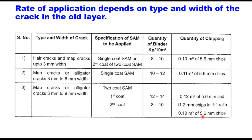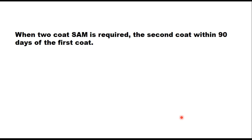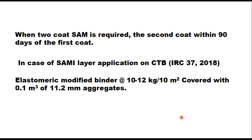For cracks above 9 mm width and when the cracked area is more than 50%, two coats of SAM are used with quantities as per the specification table. When using SAMI (stress absorbing membrane interlayer), it is laid in a single coat only. For cracks below 6 mm width, the binder quantity is 8–10 kg per 10 m² and stone chips are 0.1 m³. For cracks wider than 6 mm, binder and stone chip quantities follow the specification recommendation. When two-coat SAM is required, the second coat should be laid within 90 days of the first coat.